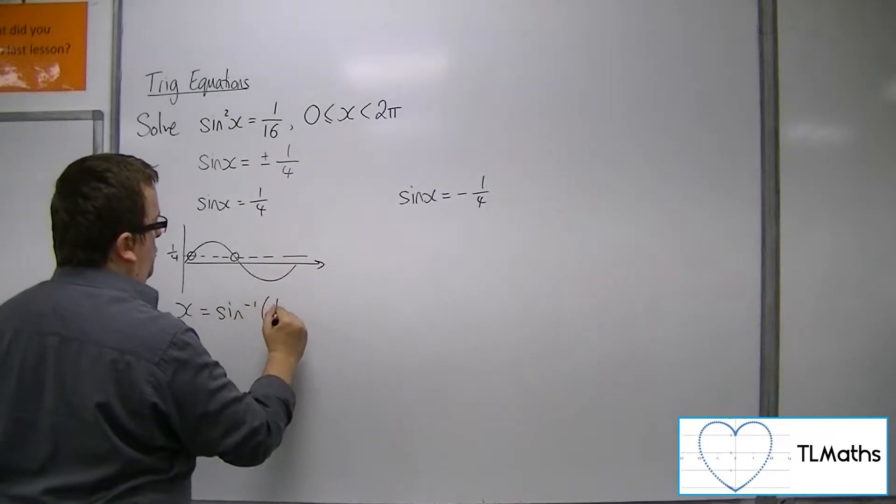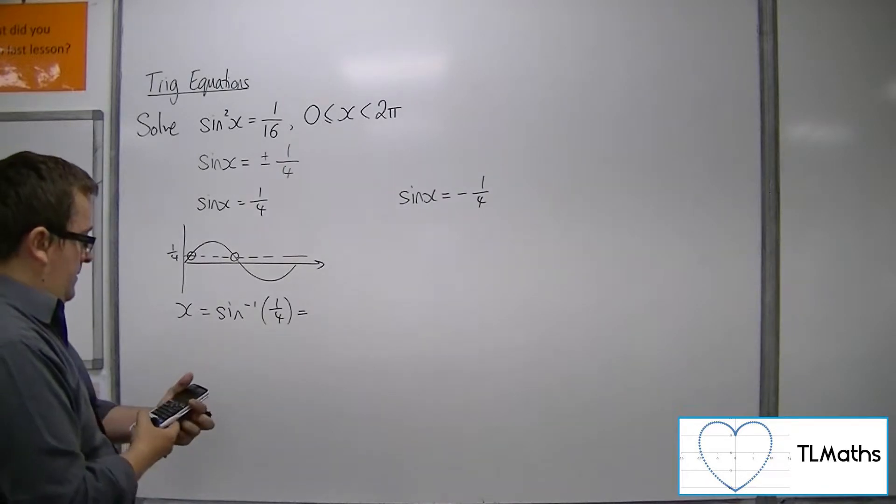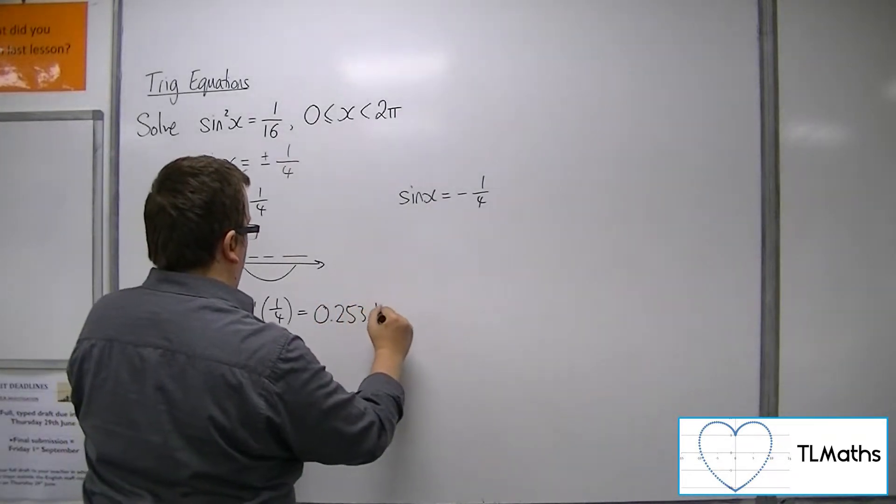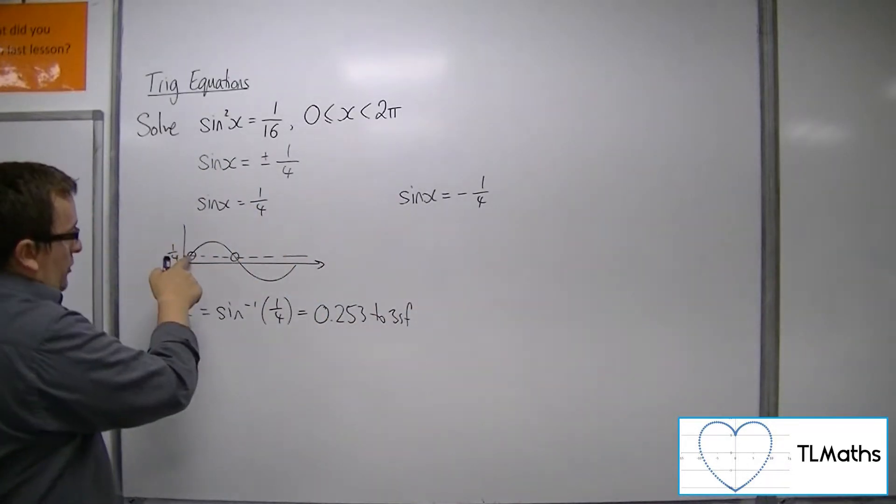The first one I can find by the inverse sine of 1/4 is 0.253 radians to 3 significant figures. So that's that solution there.